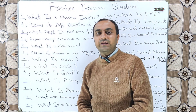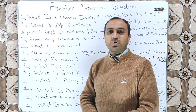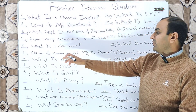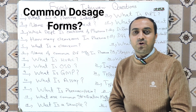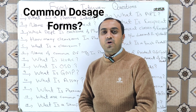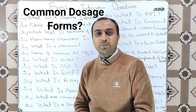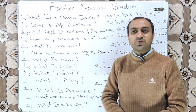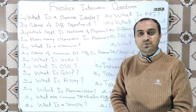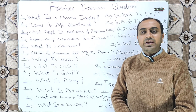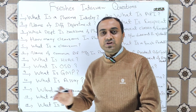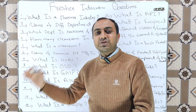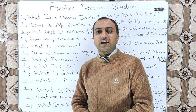Name the different types of dosage forms manufactured in the pharmaceutical industry. The most common dosage forms are tablets, capsules, dry powder for suspensions, sachets, liquid suspensions, emulsions, and injectables.